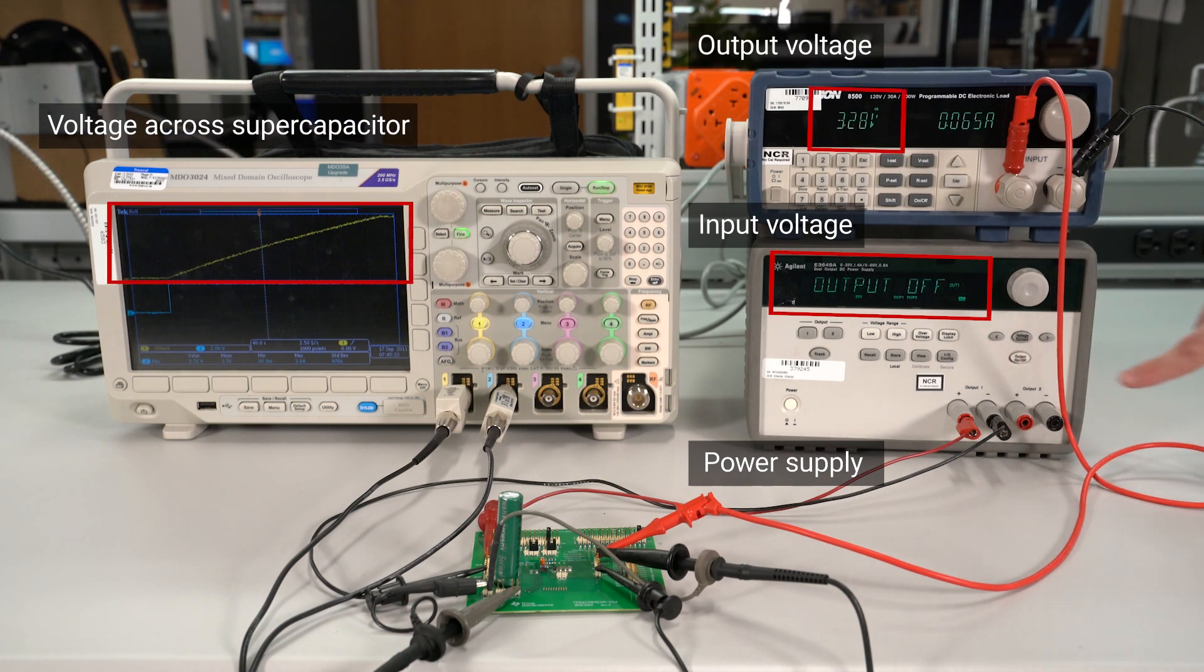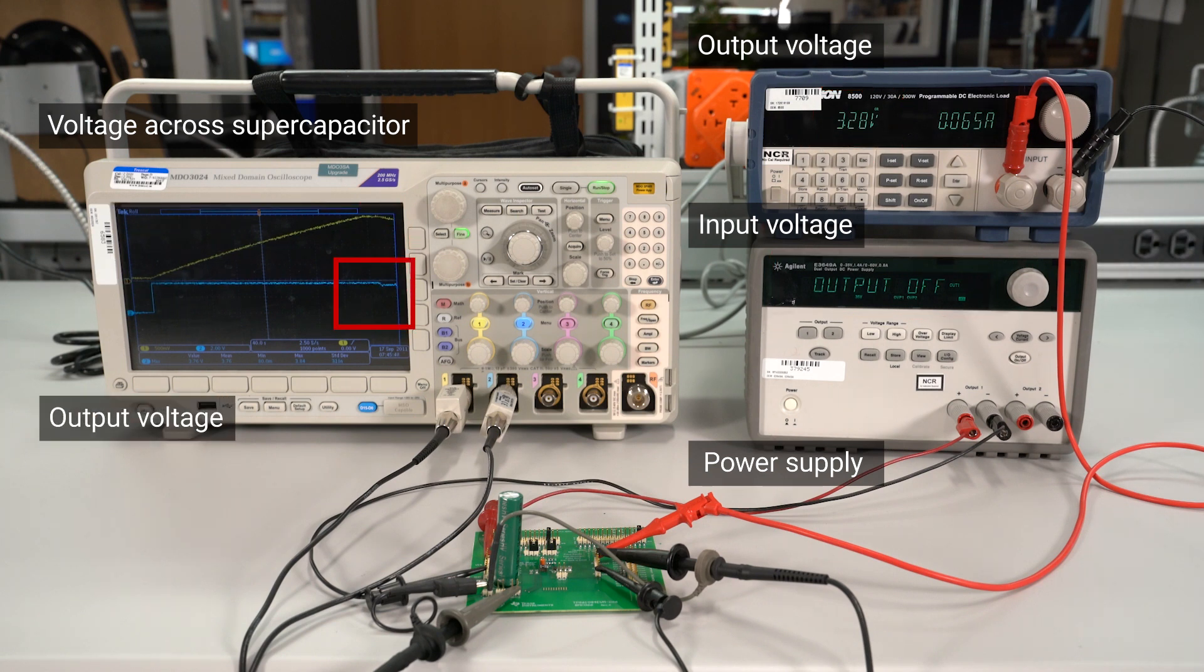If we remove the input power, we see how the device automatically transitions into boost mode when it sees the input voltage drop below 3.3 volts. The TPS61094 is now using the backup capacitor to supply power.